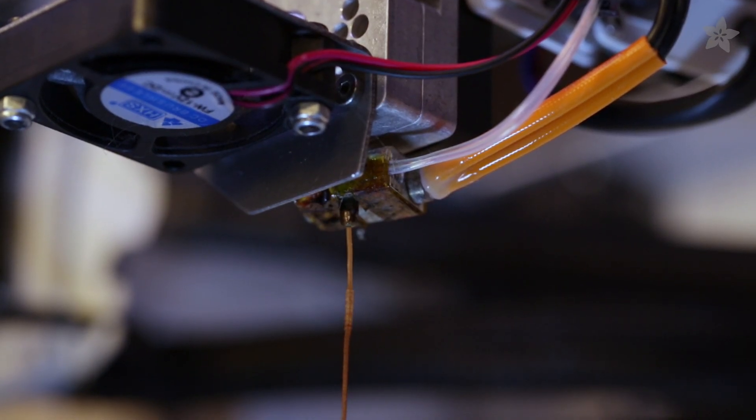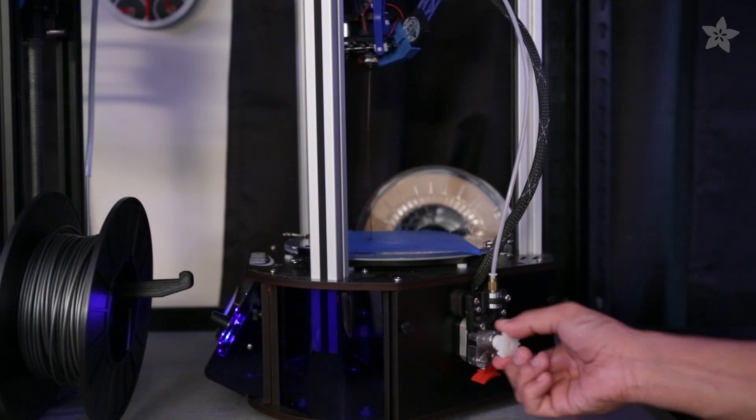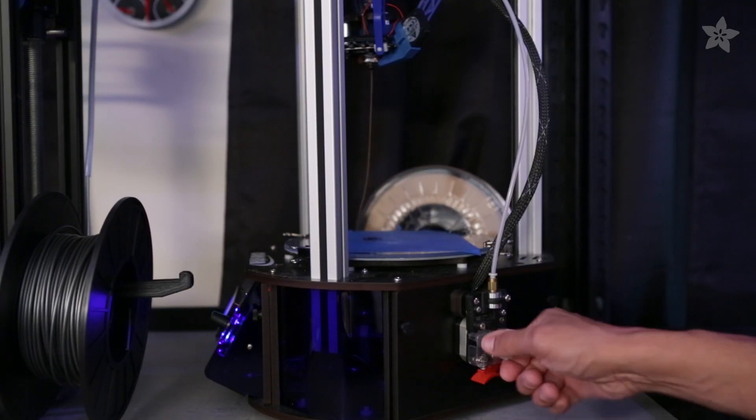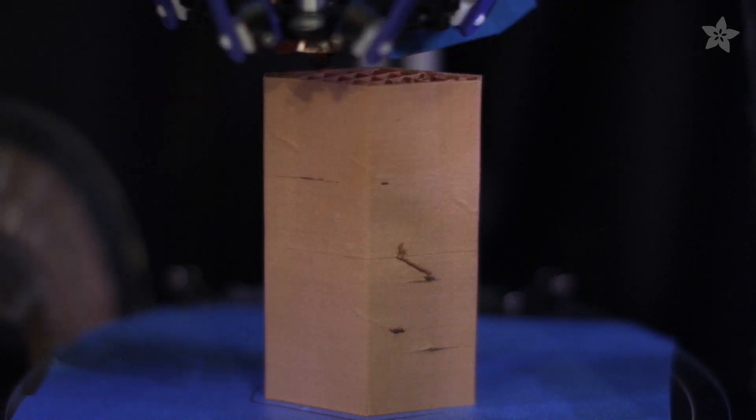While printing, you can even change the color of the filament by switching between higher and lower temperatures. Print speeds of 50mm per second work pretty well for most parts, and it's safe to use with direct drives and even Bowden systems.